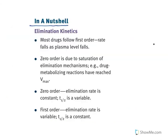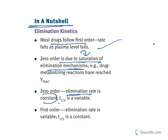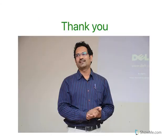To summarize elimination kinetics: most drugs follow first order kinetics. Zero order kinetics occurs due to saturation of the elimination mechanism. In zero order: elimination rate (amount) is constant but half-life is variable. In first order: a constant fraction is eliminated, so the half-life is constant but the elimination rate is variable. That concludes the topic of pharmacokinetics. Thank you for watching — if you like the video, do subscribe and share.